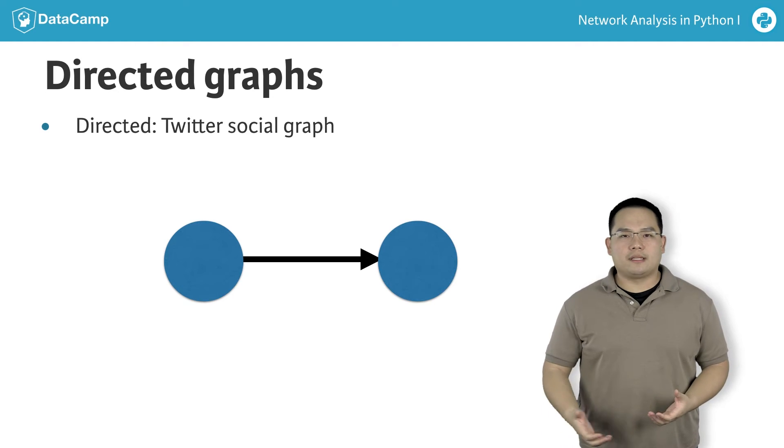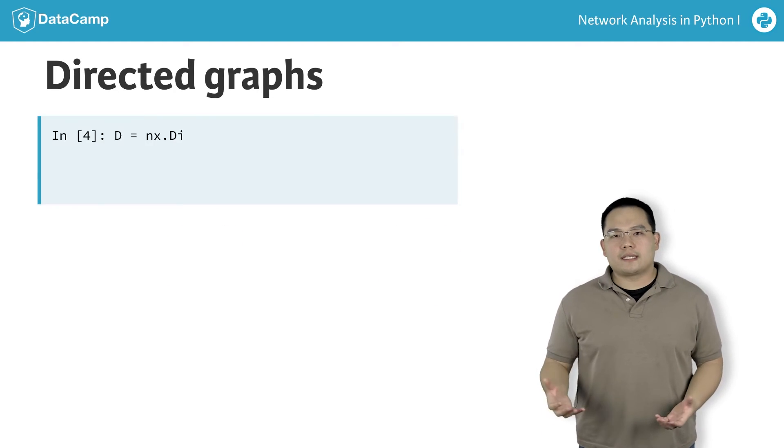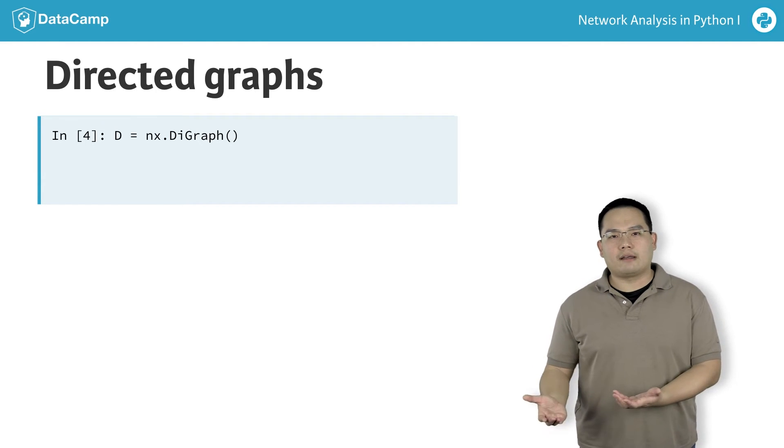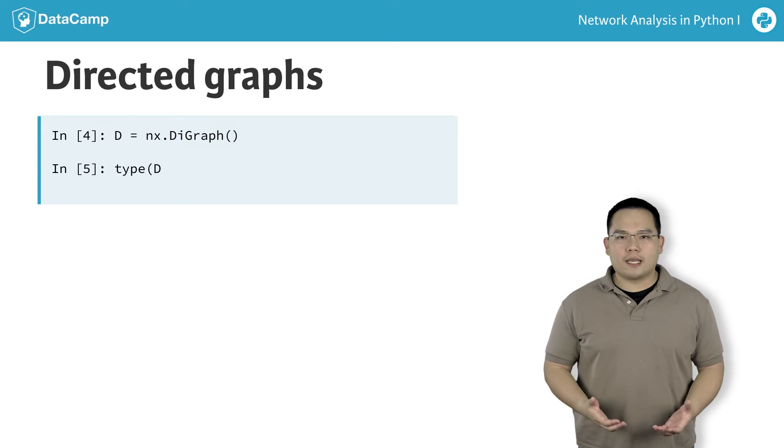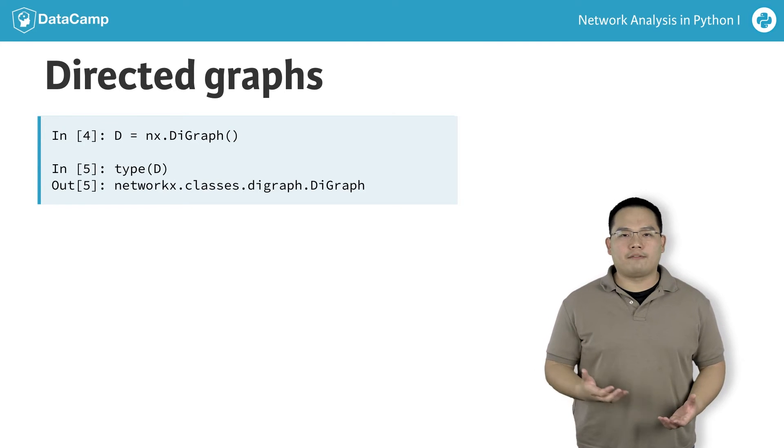If we explore this in the IPython terminal, you can instantiate an empty directed graph in NetworkX using nx.digraph. If you query for its type, it will return a digraph object.